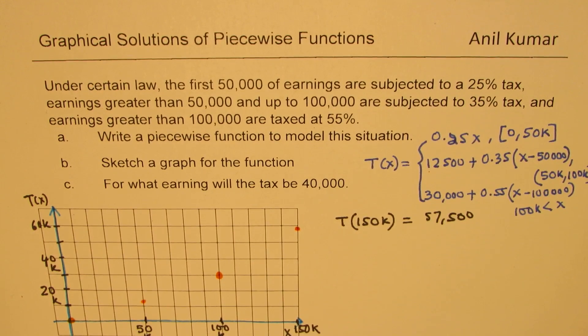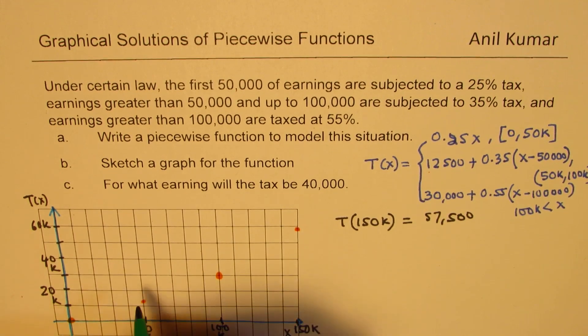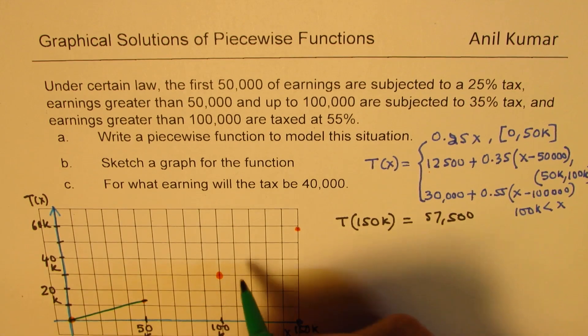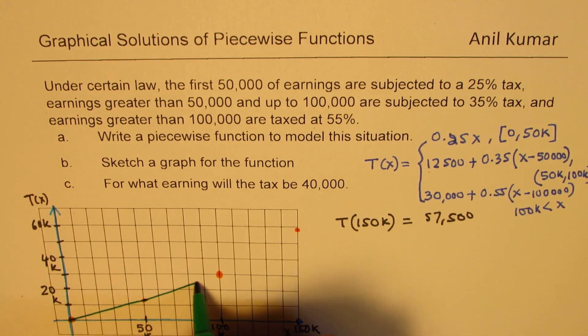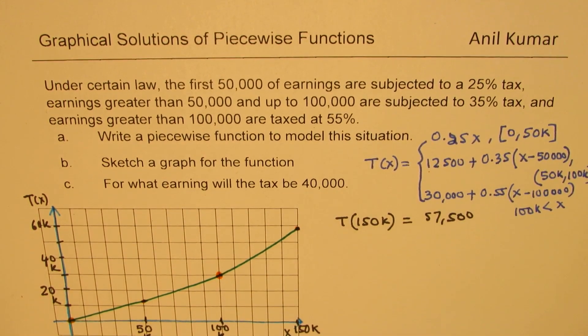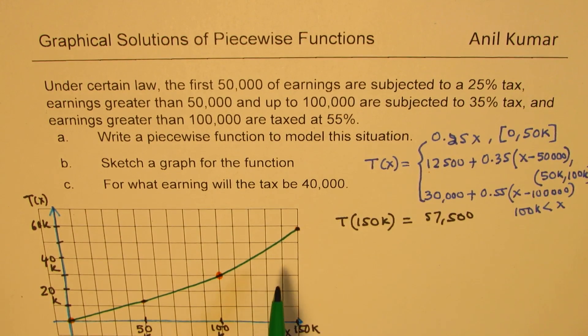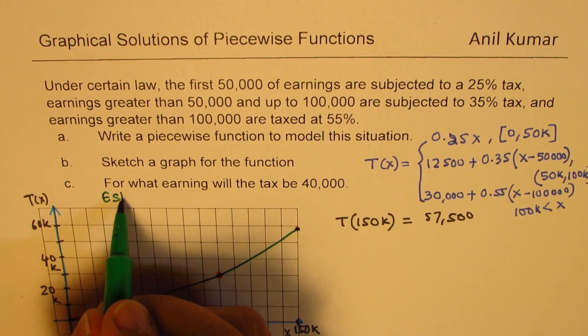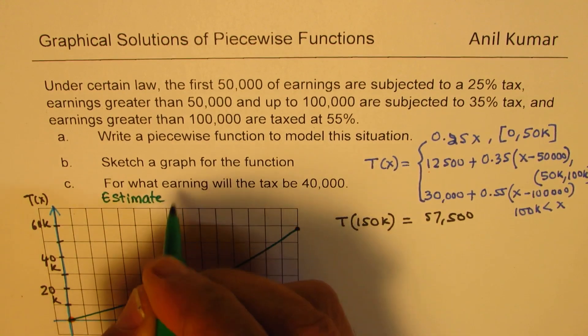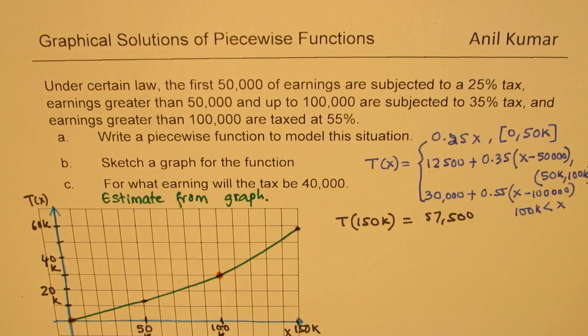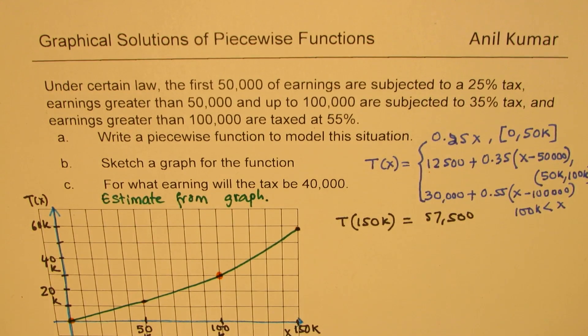Now if we connect these lines, we get our graph for different earnings. When you do it, you should do it with a scale more accurately, but I'm just giving you an idea. This is fairly accurate. As far as graphs are concerned, we are normally going to get estimated values. From the graph, I'll do estimate from graph.